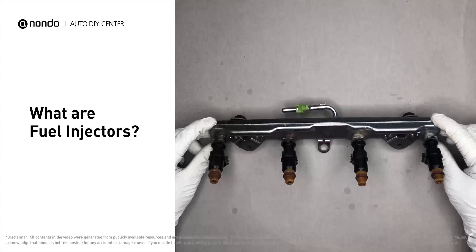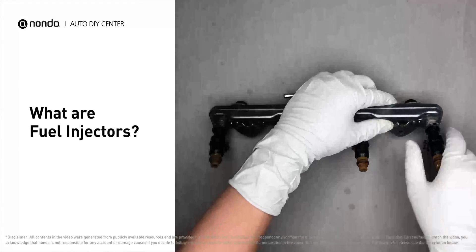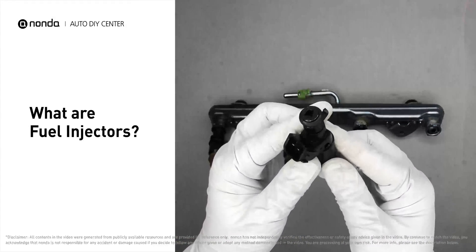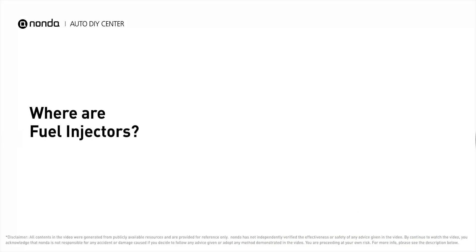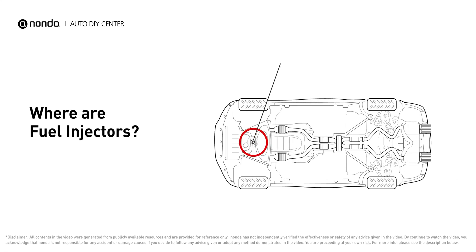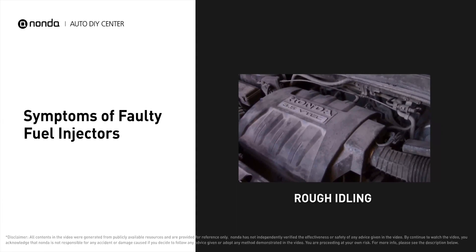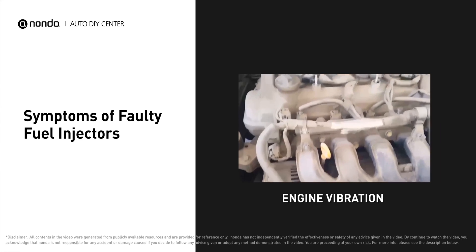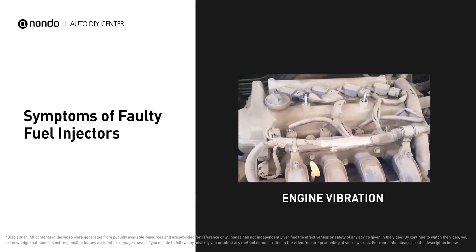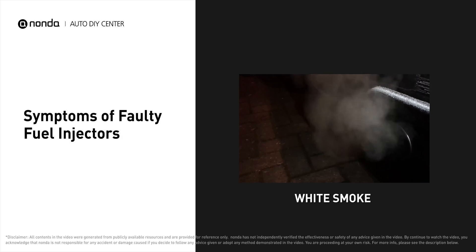Fuel injectors are part of the engine's fuel delivery system that delivers precise gasoline or diesel amounts to each cylinder exactly when needed. They have an atomizing nozzle that distributes the fuel evenly for optimum combustion and efficiency. Most fuel injectors are at the head of the engine, mounted in the intake manifold to spray fuel directly at the intake valves. A faulty fuel injector can cause a rough or violent idle, engine vibration, white smoke from the tailpipe, and poor gas mileage.